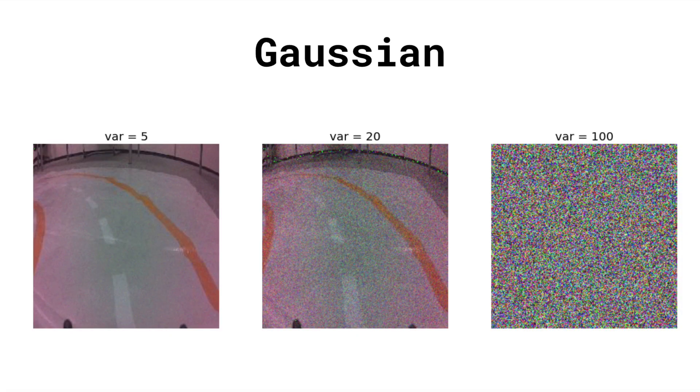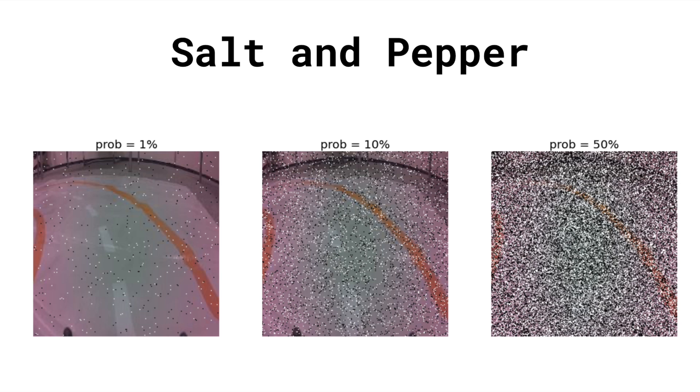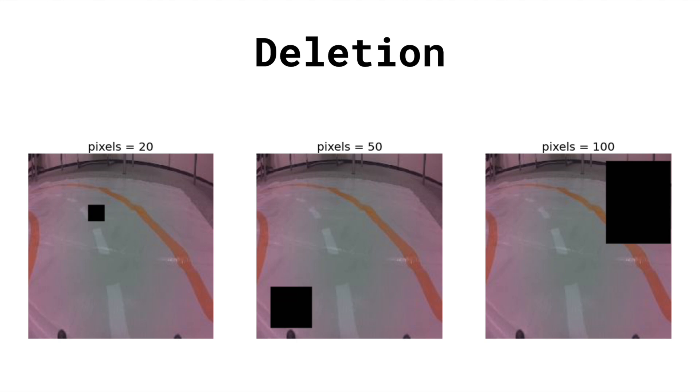Another approach to augmentation is to randomly introduce noise. This includes Gaussian noise, where we adjust each pixel by a value sampled from the normal distribution, or salt and pepper noise, where we randomly change some pixels to either black or white. In production, a model could be expected to make predictions on images of varying quality, and Gaussian and salt and pepper noise aim to reduce the quality of our training images, making the model robust to these changes. Deletion is another way of introducing random noise — this works by deleting large chunks of the image.